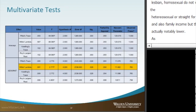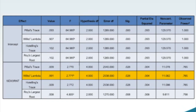Moving to the multivariate tests table, we focus on Wilks' Lambda. SPSS outputs several options, but for this example we focus on Wilks' Lambda. The F-test value is 2.77, the Wilks' Lambda value is 0.991, and the significance (p-value) is 0.026, which is less than 0.05 — indicating a statistically significant result. The partial eta squared reflects effect size, and the observed power is 0.765, which is slightly below the 0.80 threshold we typically aim for.